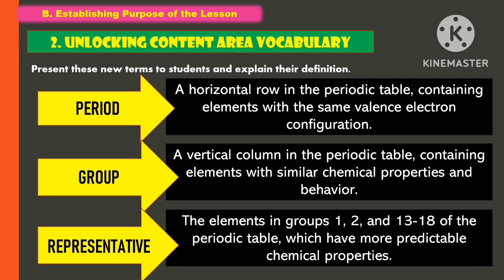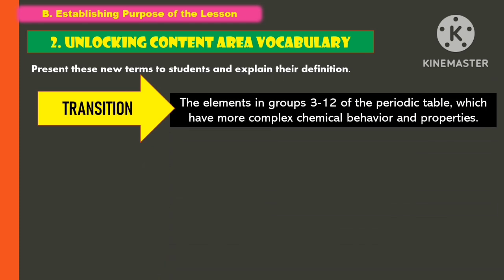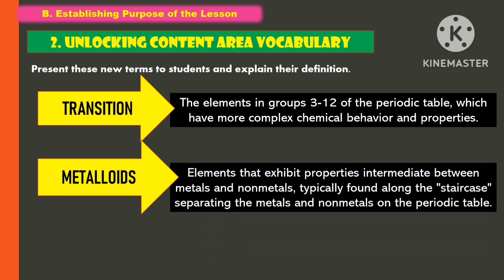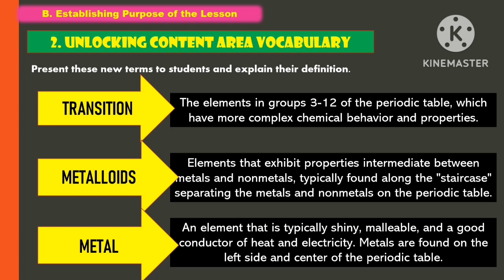The third word is representative — these are the elements in groups 1, 2, 13, and 18 of the periodic table which have more predictable chemical properties. Another word is transition — these are the elements in groups 3 to 12 of the periodic table which have more complex chemical behavior and properties. Another word is metalloids — these are elements that exhibit properties intermediate between metals and nonmetals, typically found along the staircase separating the metals and nonmetals on the periodic table.